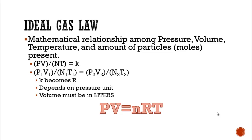We are going to change it up again and call this the ideal gas law. This total combination using all four measurable quantities is our ideal gas law — the mathematical relationship among pressure, volume, temperature, and amount of particles, or moles, present. We had PV divided by NT equals K. To get to the ideal gas law, we are going to take this K and turn it into R. This R depends on the pressure unit.